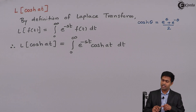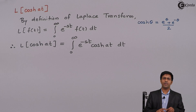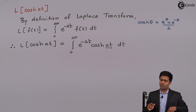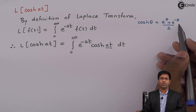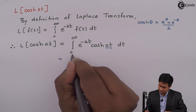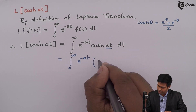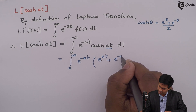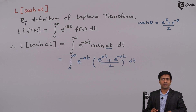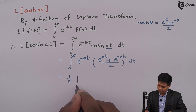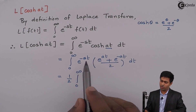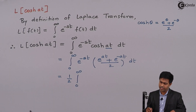Comparing hyperbolic cosine theta with hyperbolic cosine at, we can say that theta equals at. So on the right hand side we get e raised to at plus e raised to minus at, upon 2. Substituting this, we get the integration from 0 to infinity of e raised to minus st times the quantity e raised to at plus e raised to minus at. Since 1 upon 2 is a constant, we take it outside the integration.